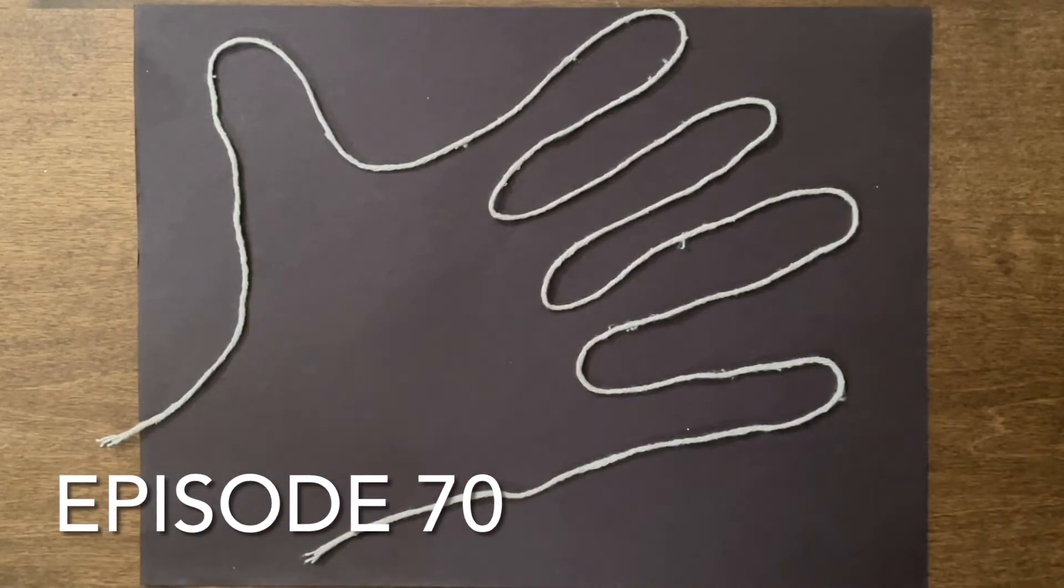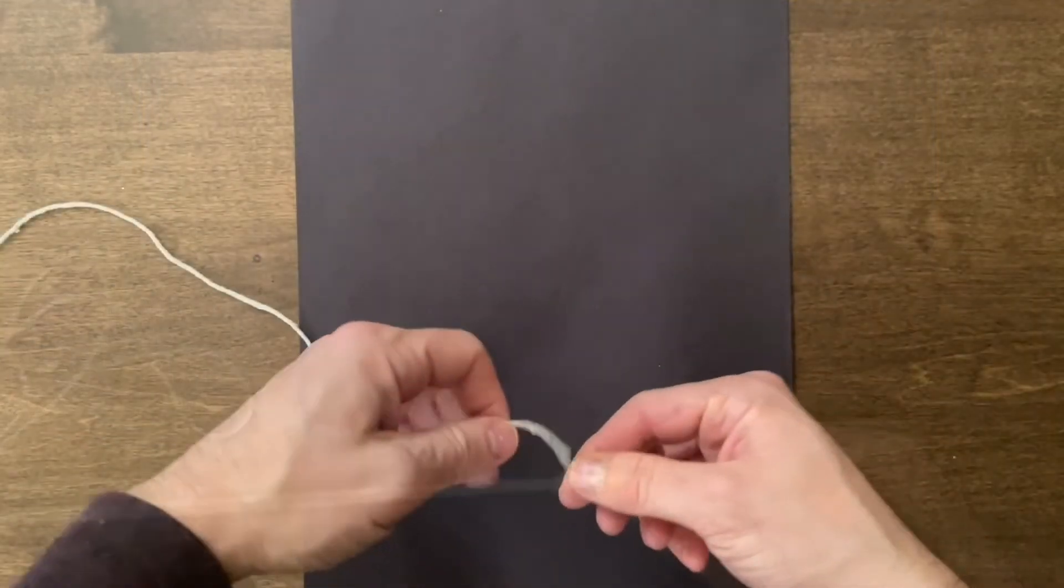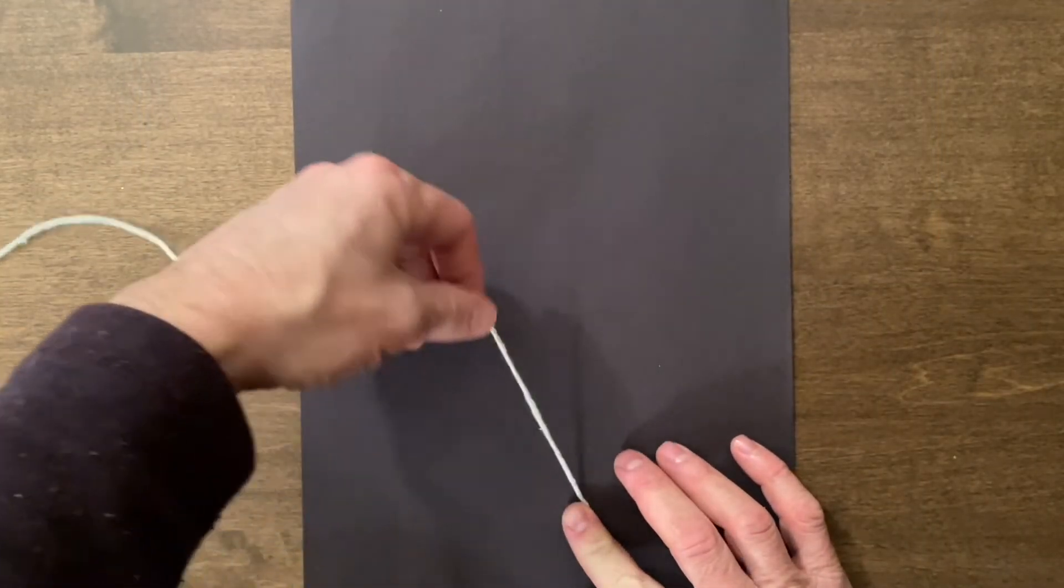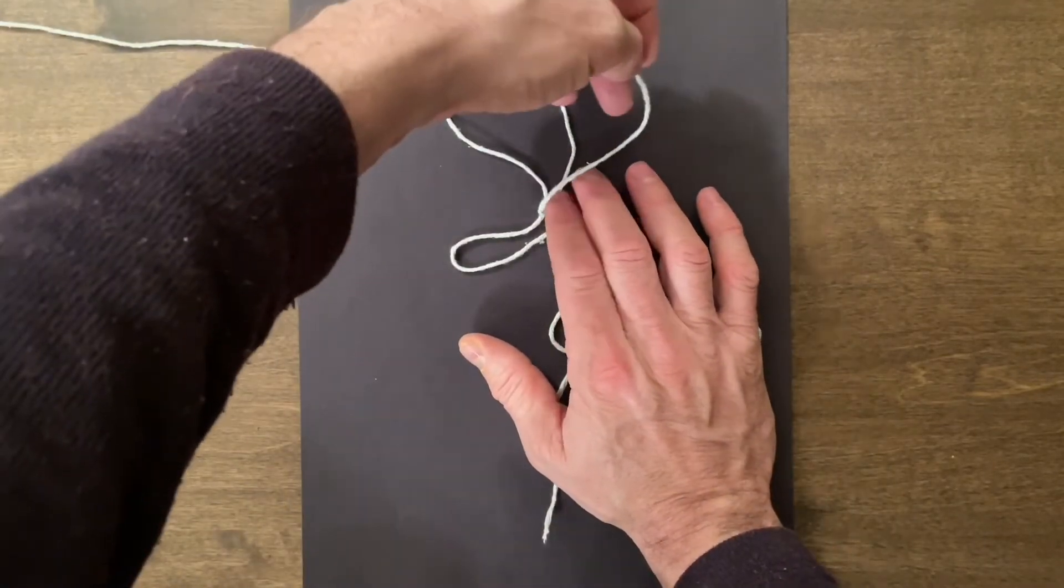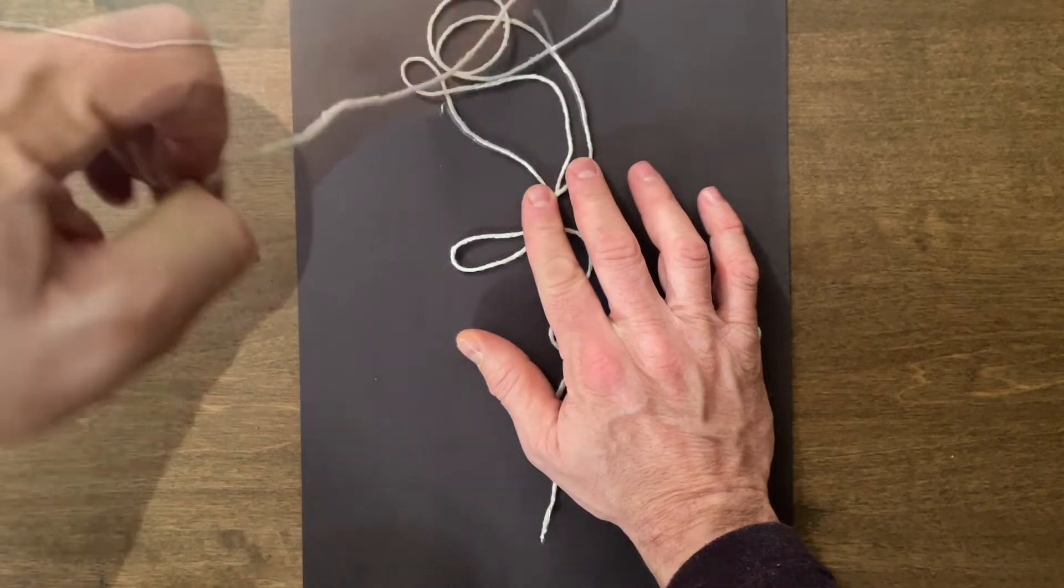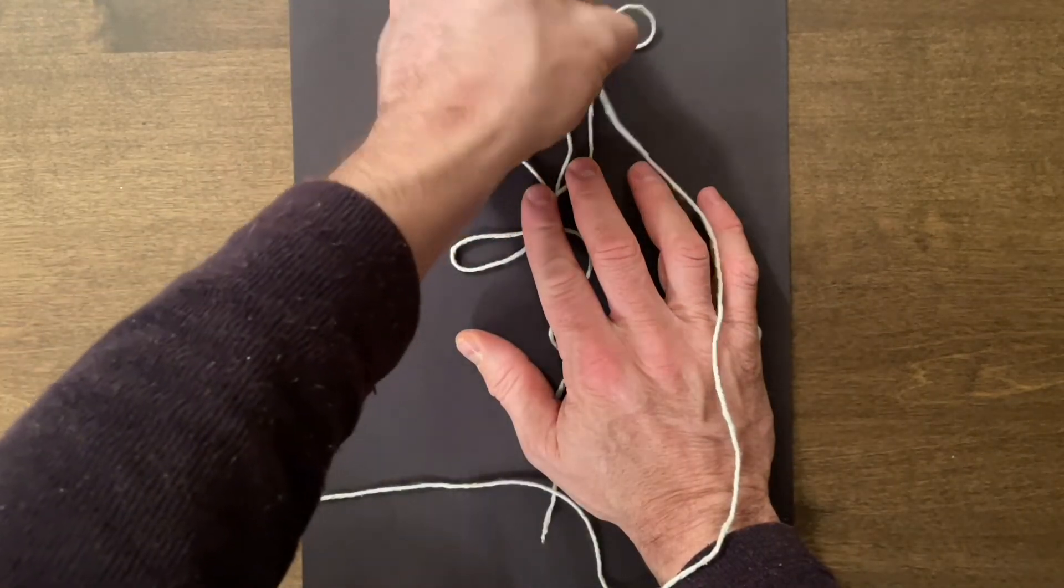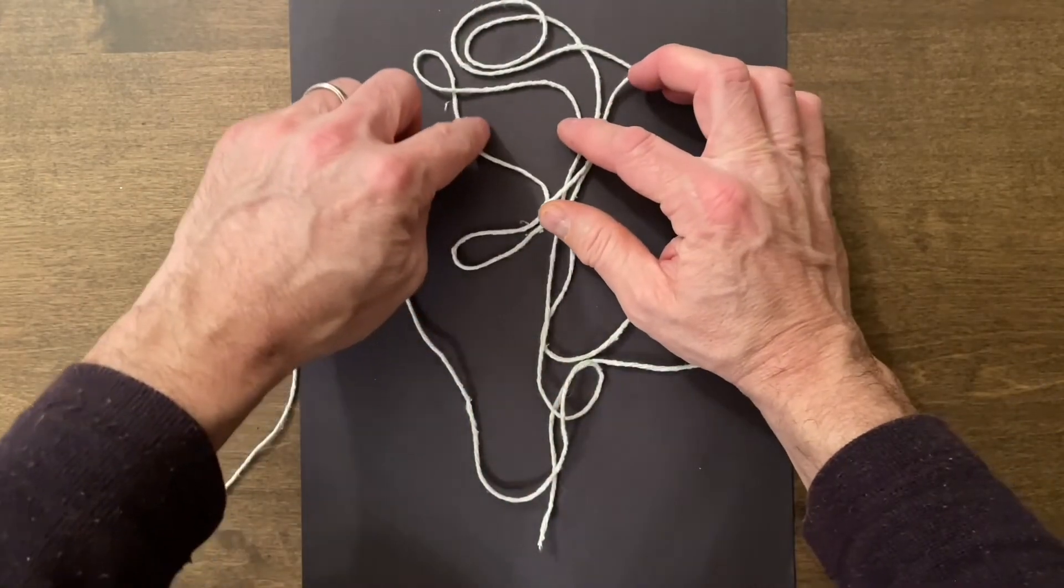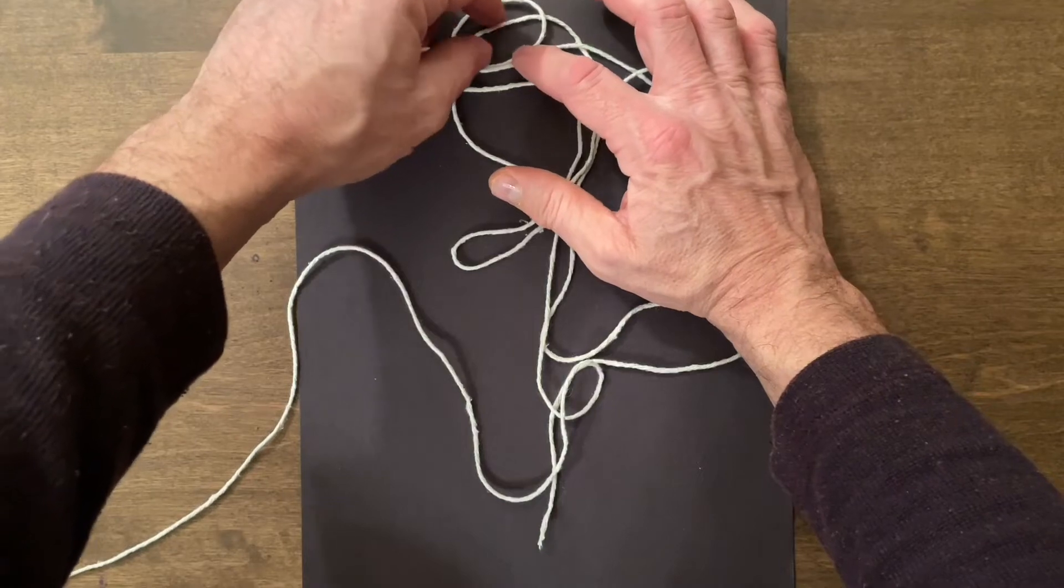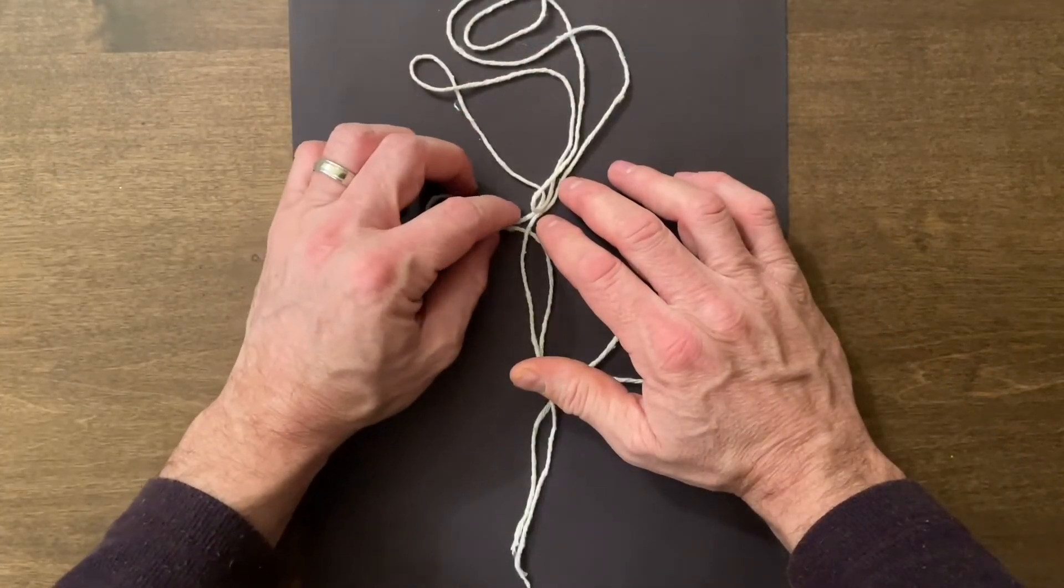In episode 70 I drew with string. I arranged string on a dark background and by curling and curving the string I realized that I could make pictures that I considered to be drawings. It was actually hard to get the string to stay in place. I remember having to hold it in different places. But if I was very careful I could move the string just enough to create a picture.